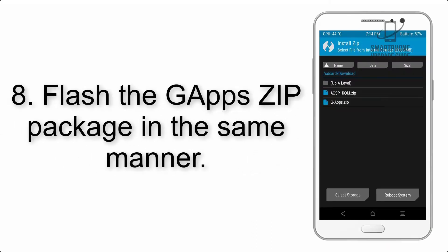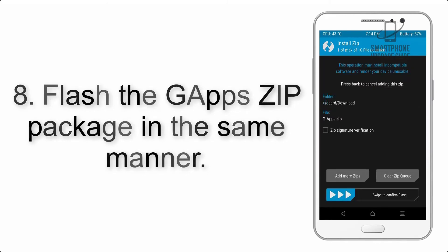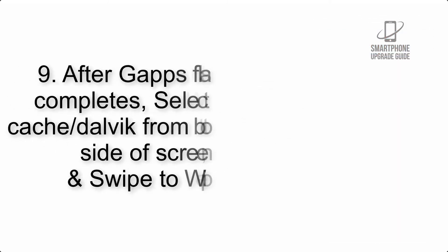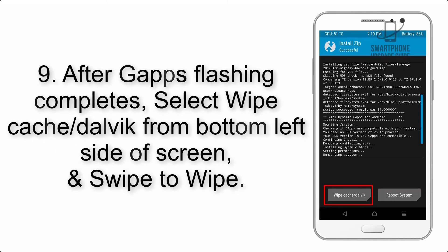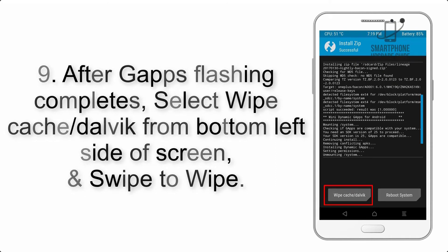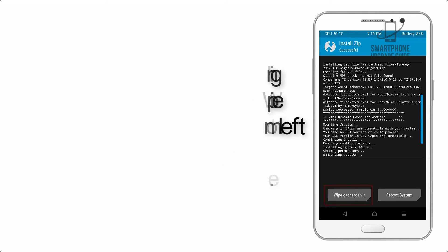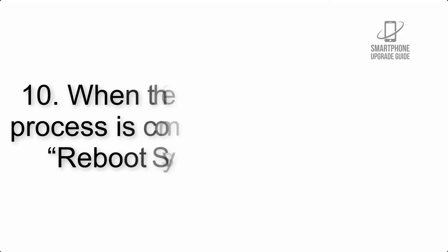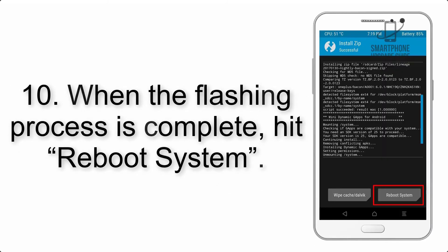Step 8: Flash the GApps zip package in the same manner. Step 9: After GApps flashing completes, select Wipe Cache and Dalvik from the bottom left side of the screen and swipe to wipe. Step 10: When the flashing process is complete,